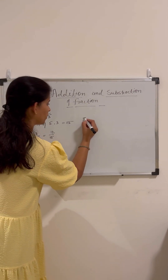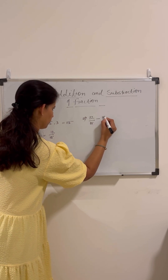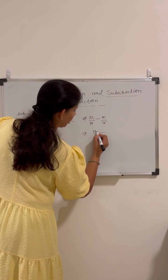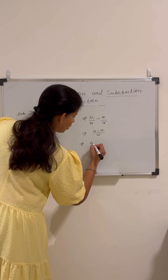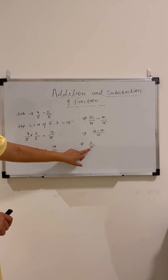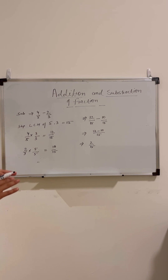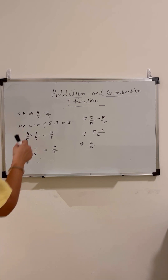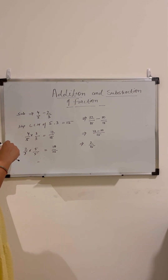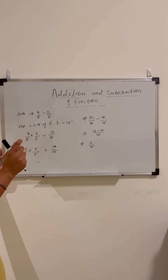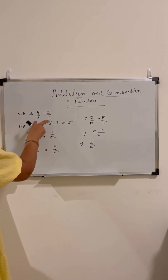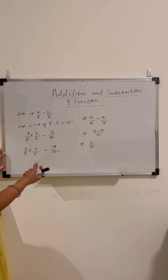Now the denominator is the same. We apply the subtraction method for the numerators: 12 minus 10 equals 2, giving us 2 by 15. So 4 by 5 minus 2 by 3 equals 2 by 15. The most important thing to remember is that when we subtract or add unlike fractions, we must convert them into like fractions by finding the LCM of the denominators and making them the same.